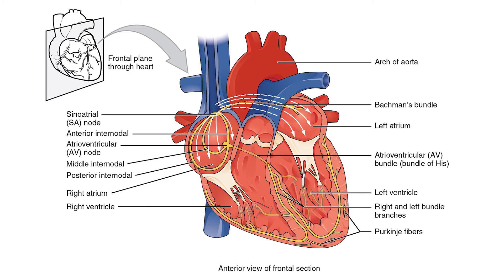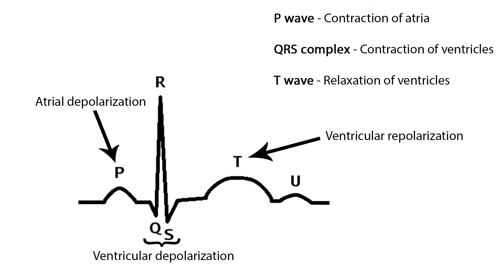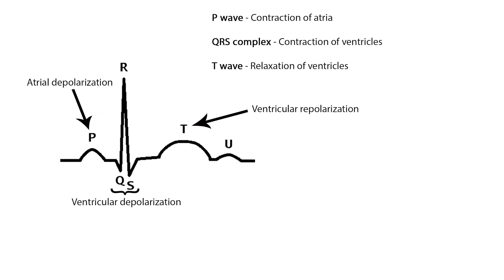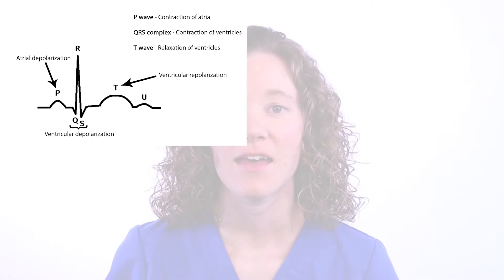The bundle of Hiss branches off into right and left bundles to the Purkinje fibers, causing the depolarization or contraction of the ventricles. The Purkinje fibers fire at a rate of 20 to 40 beats per minute. The contraction of the ventricles is shown as the QRS complex on the EKG. Finally, the ventricles must return to the resting state, which is called ventricular repolarization and is represented by the T wave on the EKG.